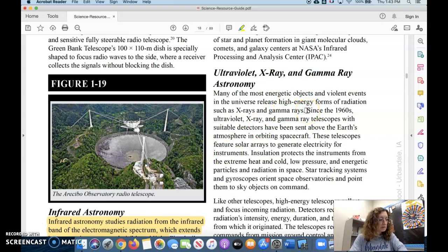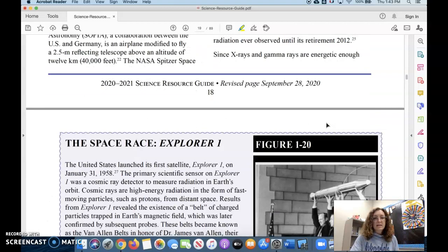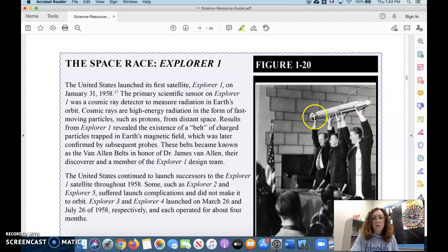We have ultraviolet, X-ray, and gamma-ray telescopes. These are all tools used to gather information from space. Down here we have our second little postage stamp story. This is Explorer 1, the United States' first satellite. Notice this is also quite small.